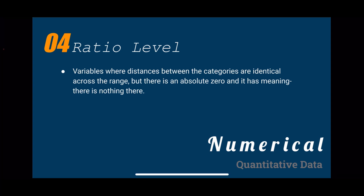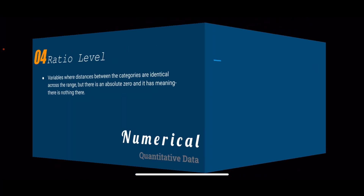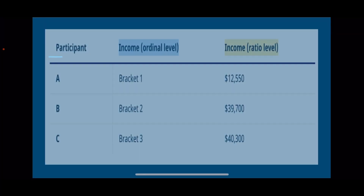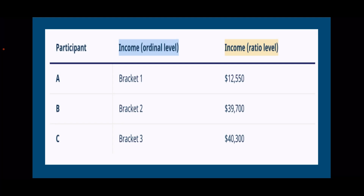In ratio level, you can categorize, rank, and infer equal intervals between neighboring data points, and there is a true zero point. For example, if you want to measure the variable income, the table shows the difference between the ordinal and ratio scale. Ordinal shows income in brackets — bracket 1, bracket 2, bracket 3 — while ratio reveals the exact incomes. You can determine the difference between participants' incomes in ratio — the difference between A and B incomes is far greater than the difference between B and C incomes. Unlike in ordinal, you only see the bracket for each participant and not the exact amount, so you cannot determine the precise difference between participants' incomes.